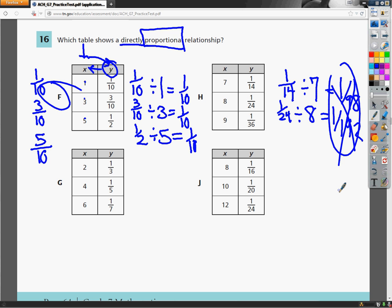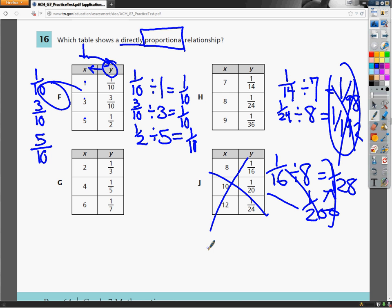Same thing if you did table J. 1 sixteenth divided by 8, 1 over 128. And if I did 1 twentieth divided by 10, I get 1 over 200. That's not the same as this. So that can't be a direct relationship. It might be a proportional relationship, but it's not a direct one.